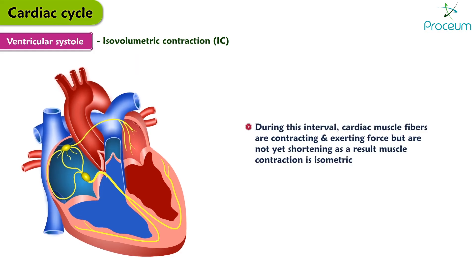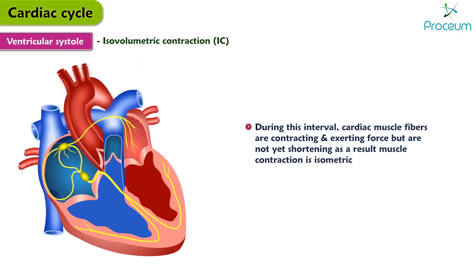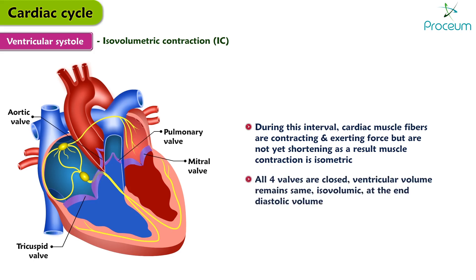During this interval, cardiac muscle fibers are contracting and exerting force but not yet shortening. As a result, the muscle contraction is isometric — the muscle length remains the same. Moreover, because all four valves are closed, ventricular volume remains the same, hence isovolumic at the end-diastolic volume.